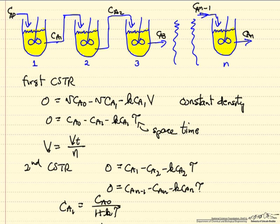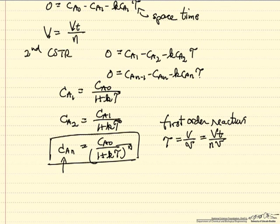We're modeling a real reactor that's non-ideal as a series of CSTRs. A very large number of CSTRs, it's going to look close to a plug flow reactor. A very small number of CSTRs approaches, of course, an ideal CSTR.